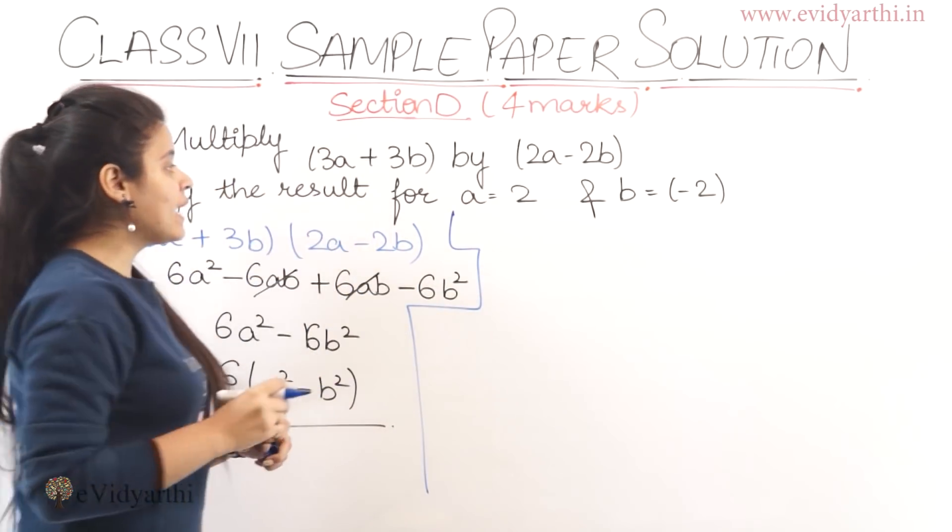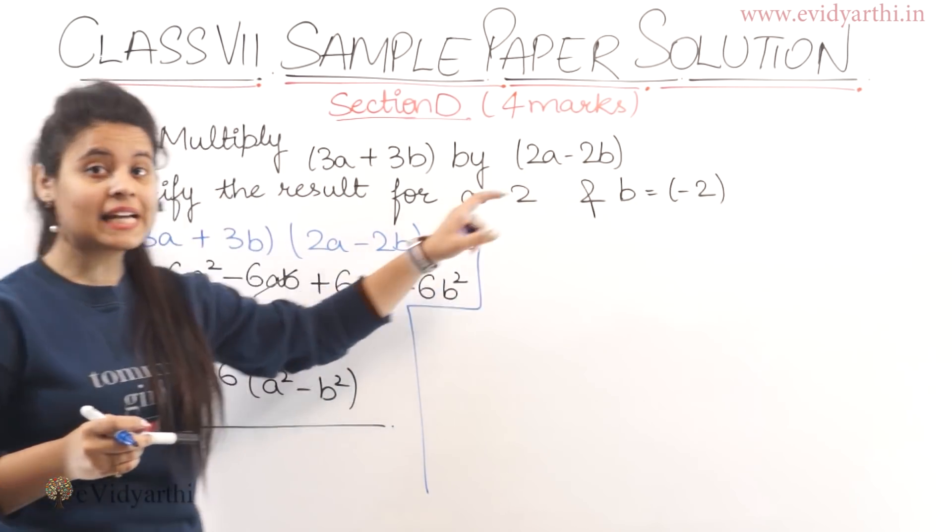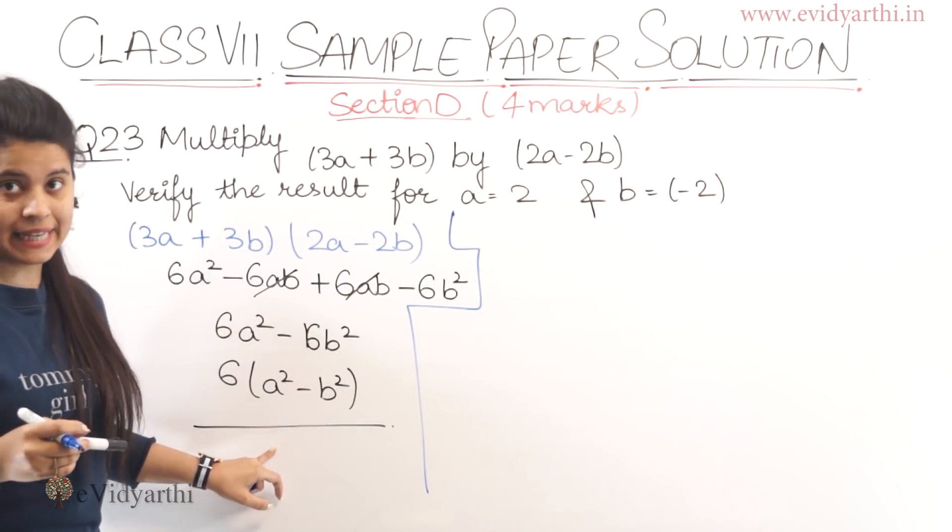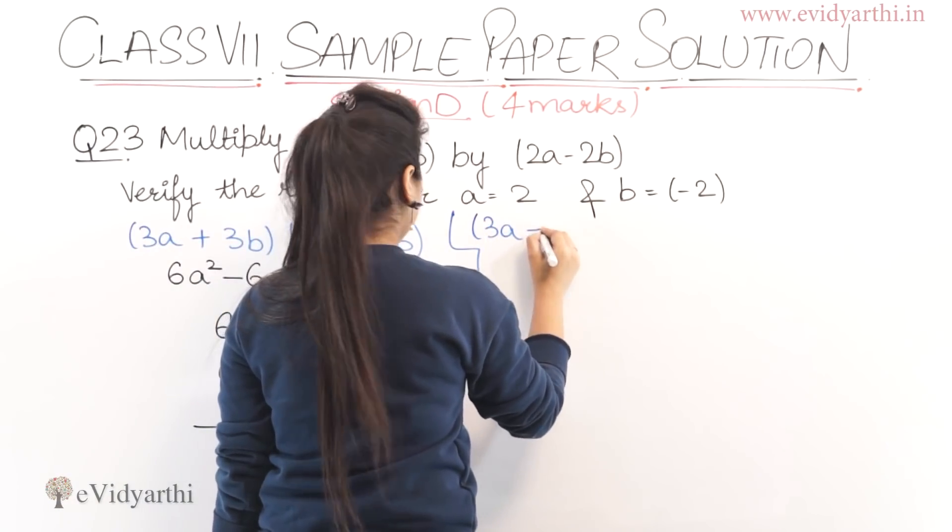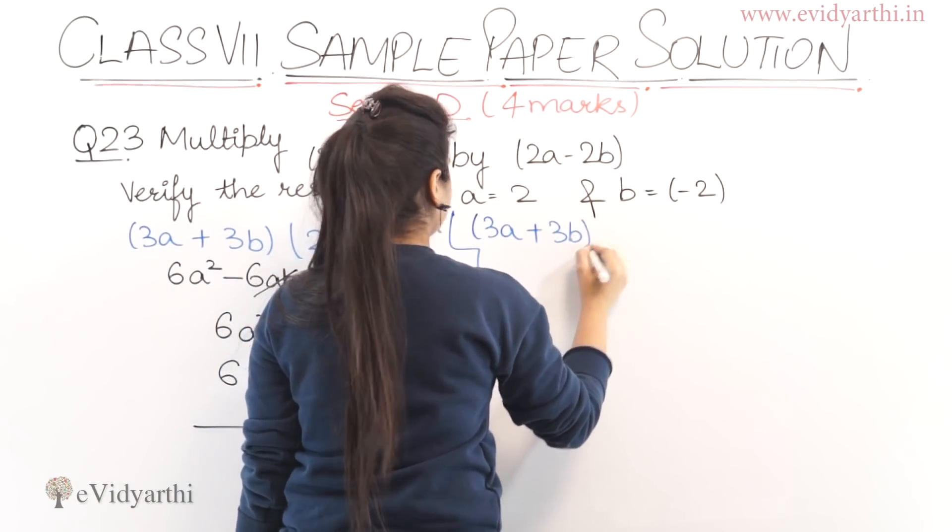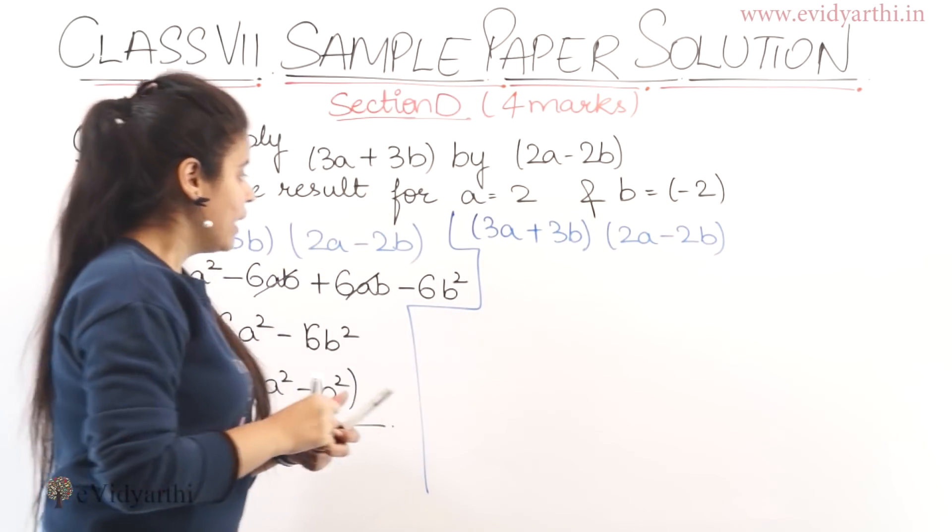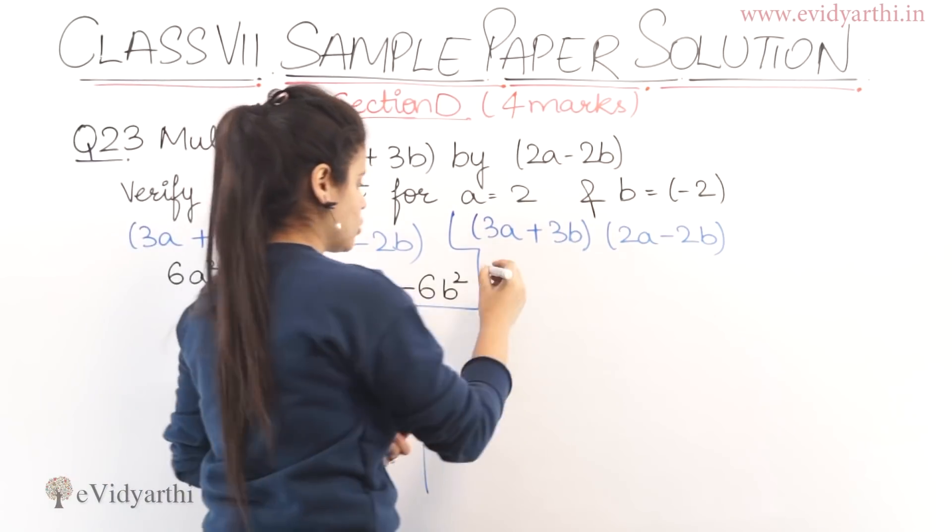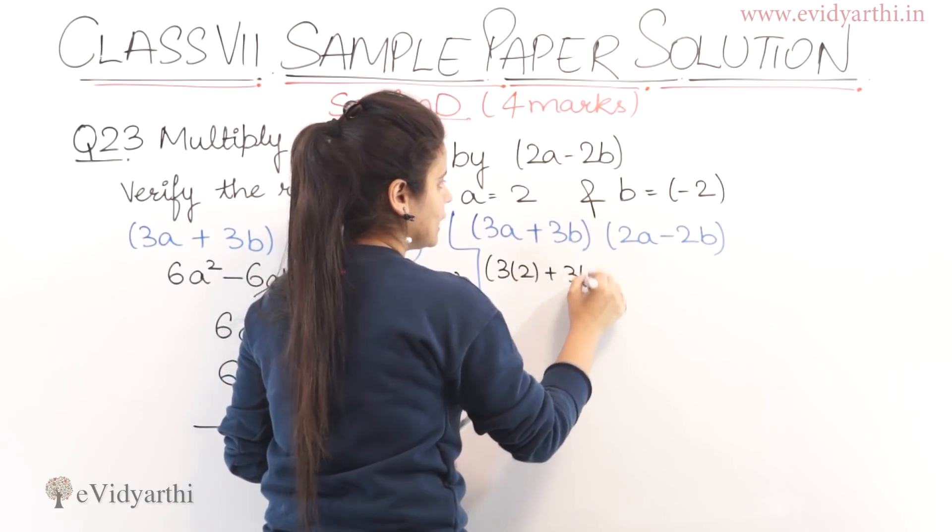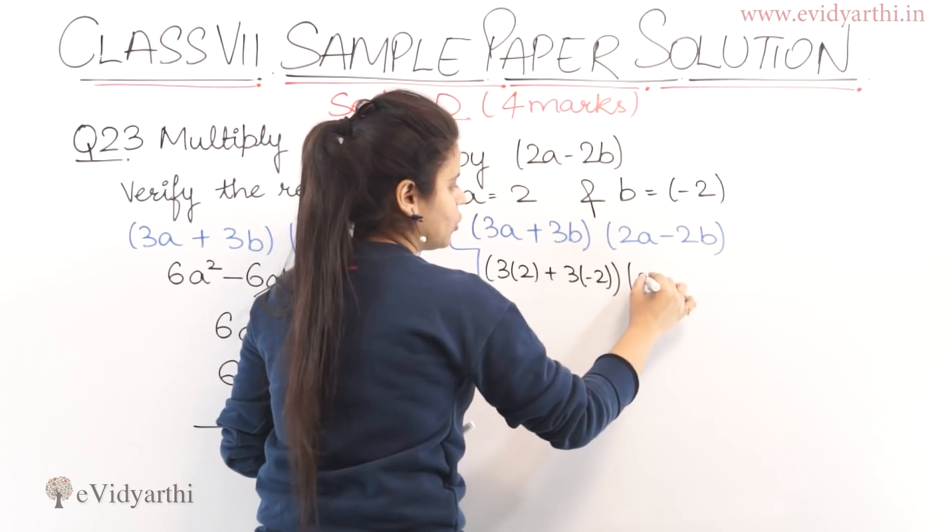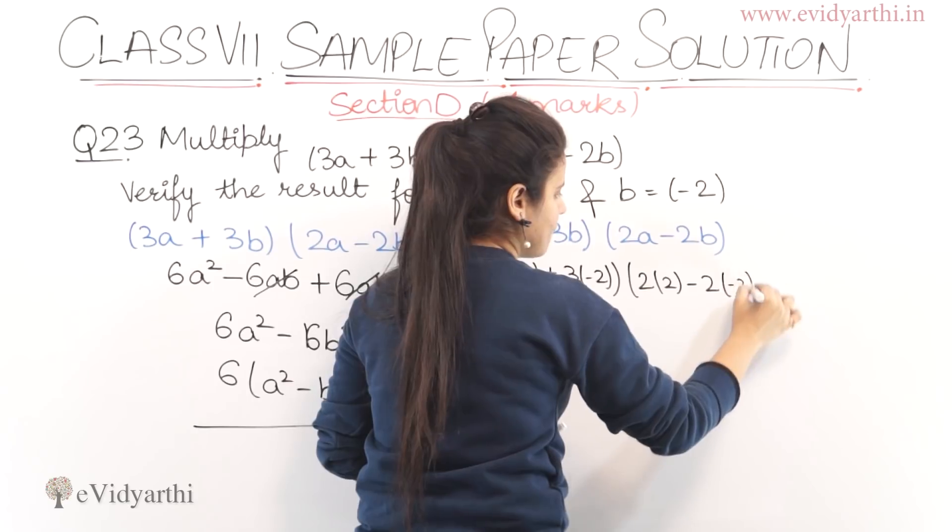So to verify we have a and b values. First we have the given expression, then we verify. We have 3a plus 3b multiply by 2a minus 2b. So here we put values of a and b. This will be 3 times 2 plus 3 times minus 2, then 2 times 2 minus 2 times minus 2.